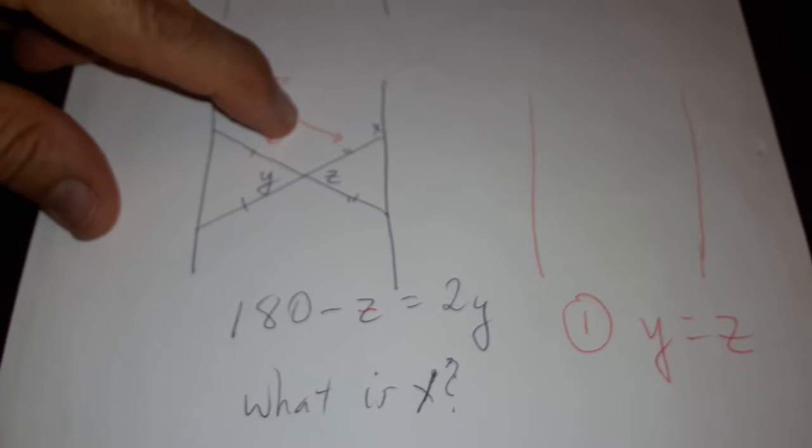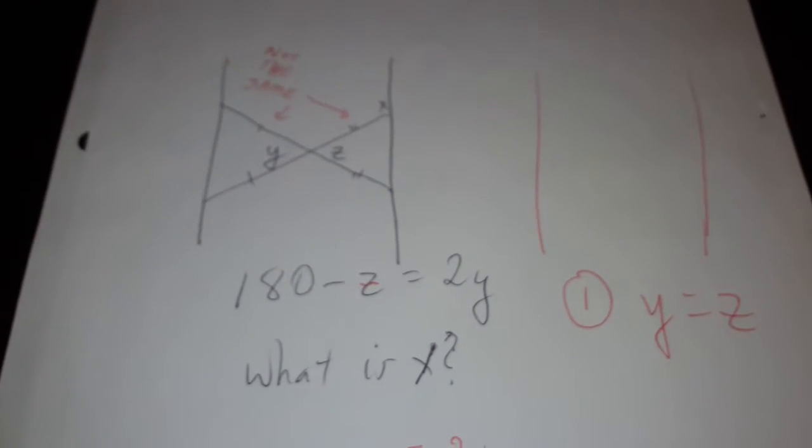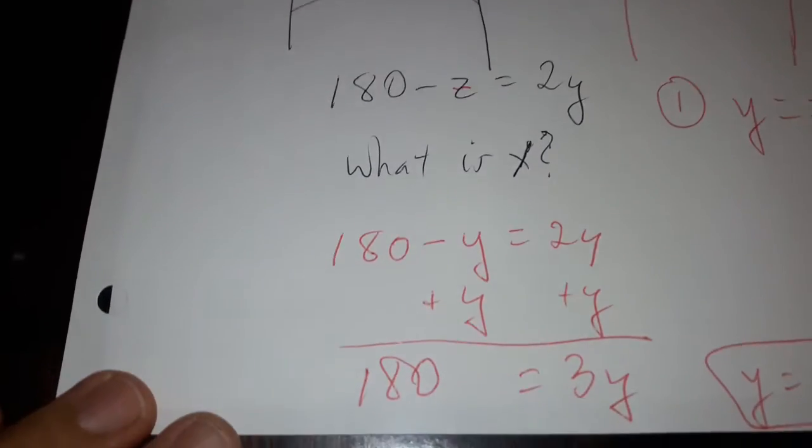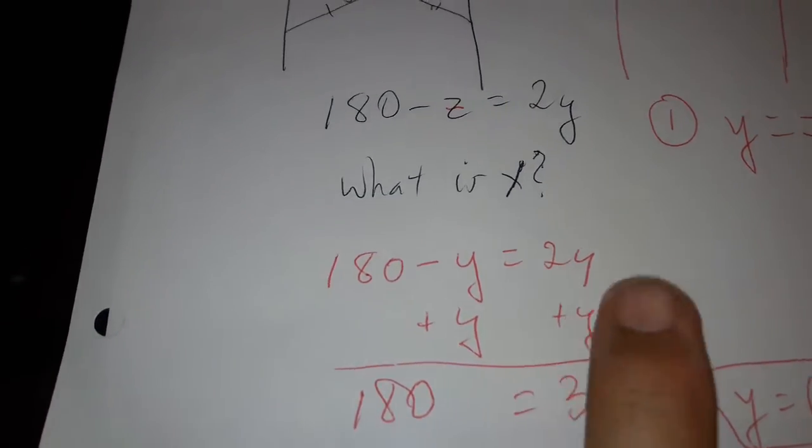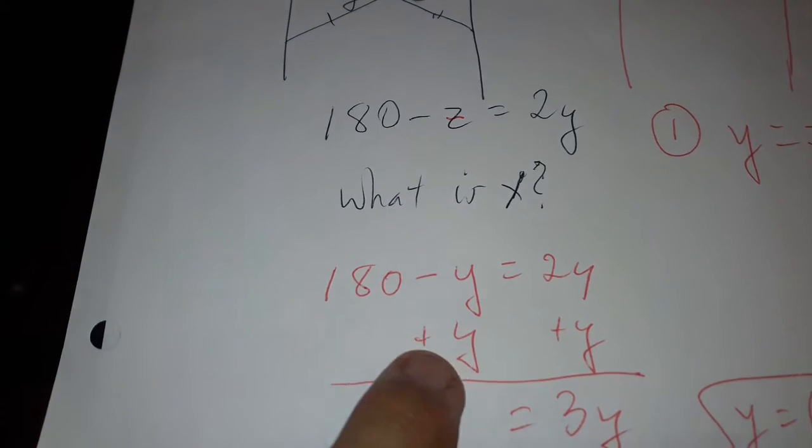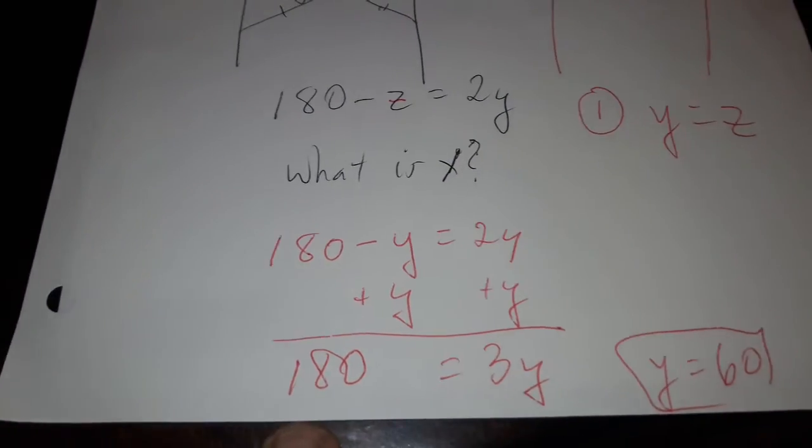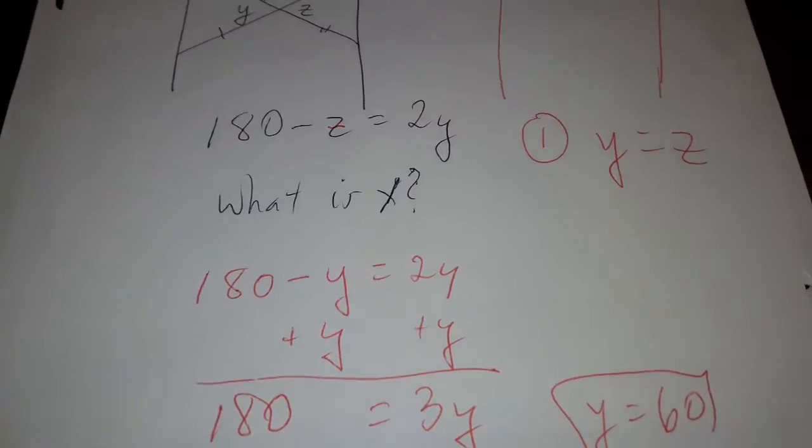So how do we find X? Well, we go through this process. We substitute Y here, and then we add Y to both sides. So three Y's are 180, so Y has to be 60.